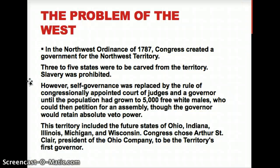A temporary government was put into those territories. The idea was that eventually, once the population hit 20,000 people, three to five states were eventually going to be carved from the territory, and at that point slavery was going to be prohibited.